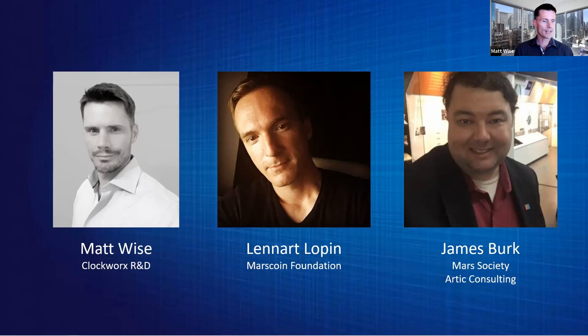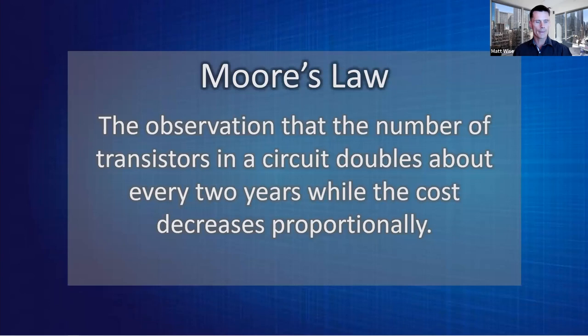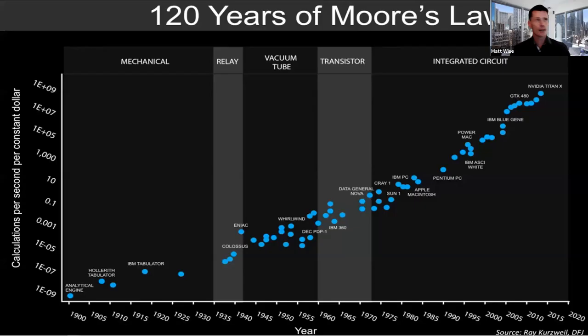Obviously, I'm not a financial advisor, legal expert, or marriage counselor, so this whole presentation is purely for information purposes only. Now for the why. I think the first way to start is to look through the lens of Moore's Law. A few decades ago, Moore observed that the number of transistors in a circuit would double about every two years while the cost was coming down proportionally.